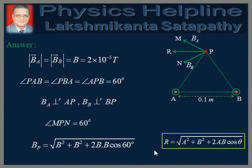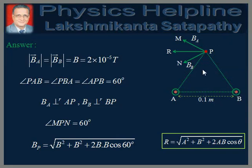The direction of BA is perpendicular to AP, so this angle is 90 degrees. BA acts along PM. Similarly, the magnetic field produced by B — that is, BB — is perpendicular to BP and acts along PN.